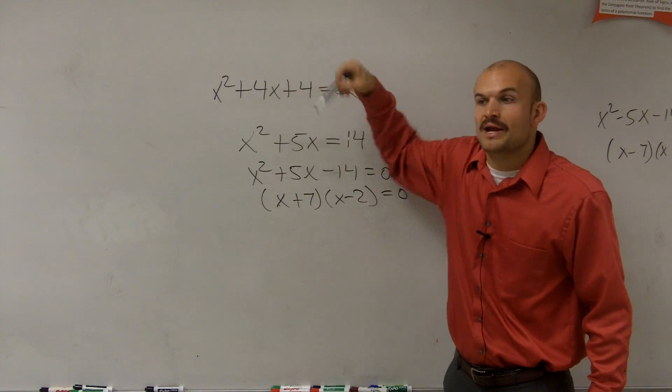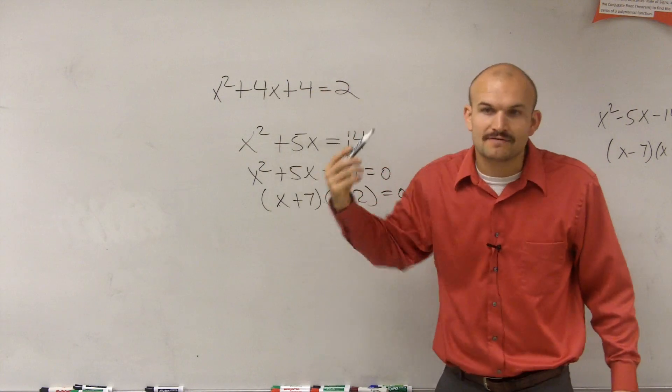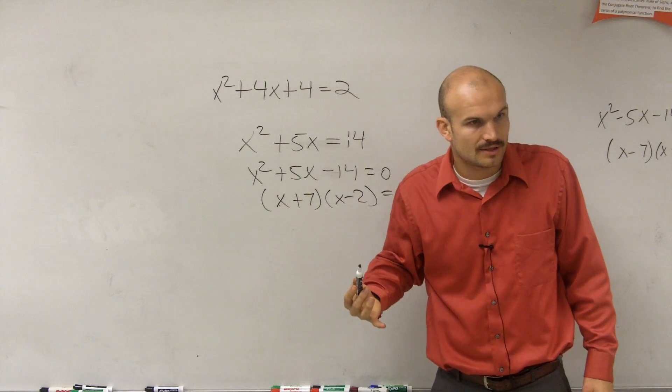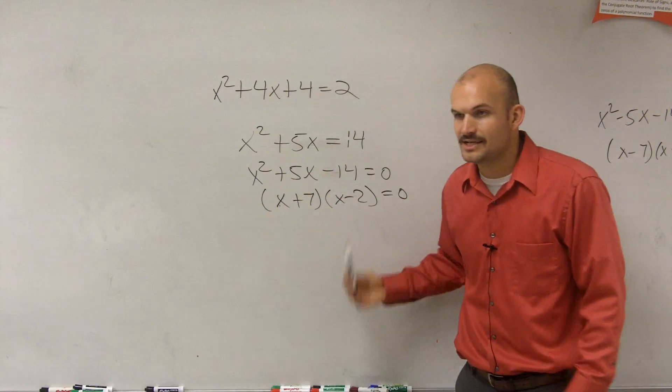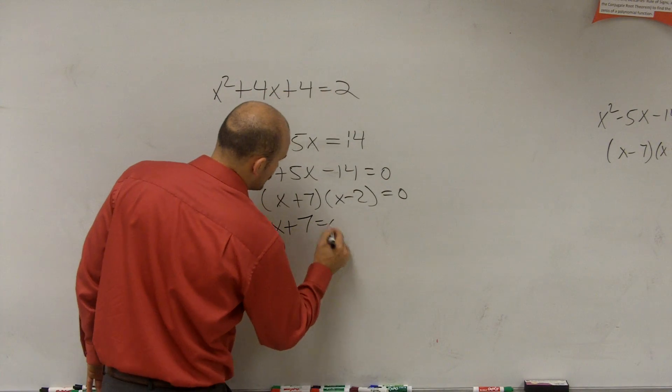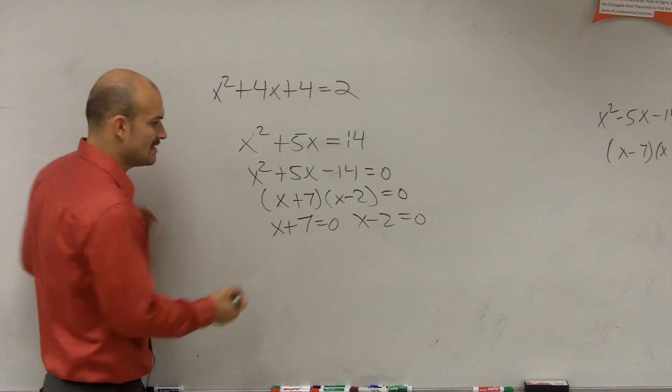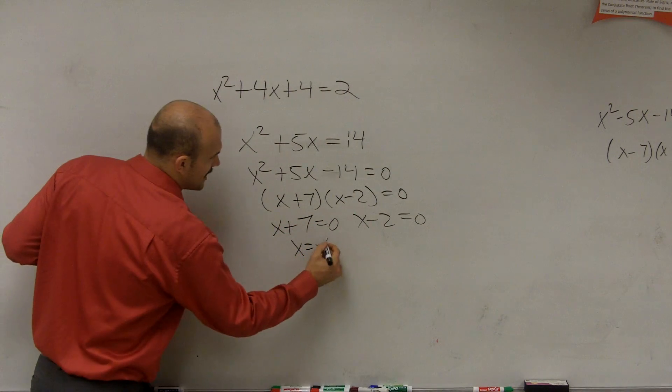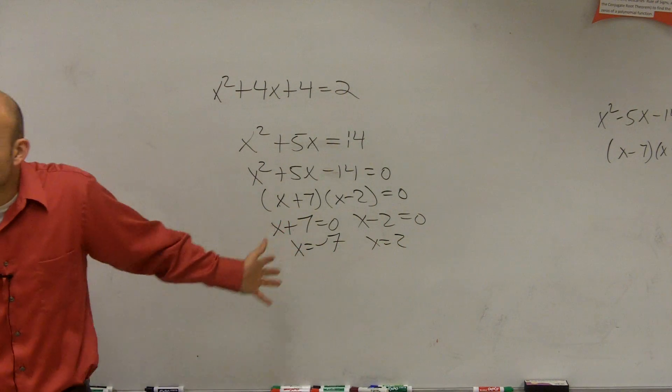When we have a factoring problem, and I say solve, you have to use factoring and you have to use the zero product property. You have to set it equal to 0, factor it, and set each of those equal to 0. So therefore, you could say x plus 7 equals 0, and x minus 2 equals 0. Now, you can find the values of x that make that true. So x equals negative 7 and x equals positive 2. That's what we've done before.